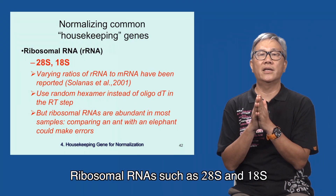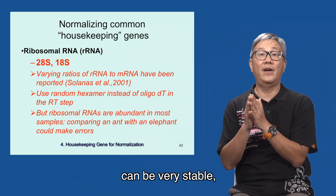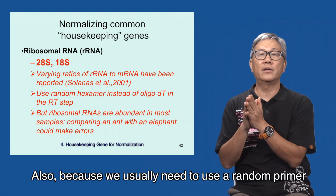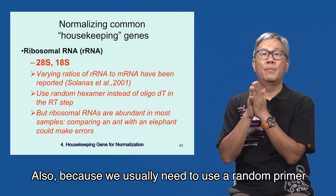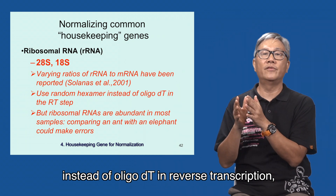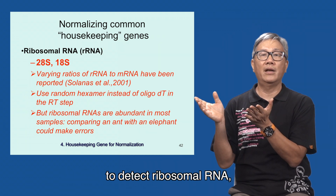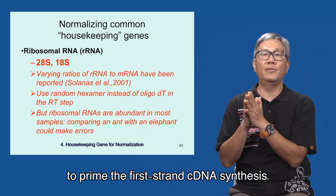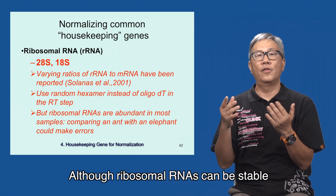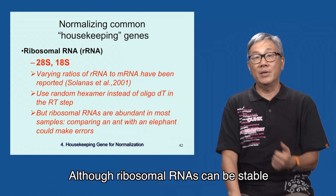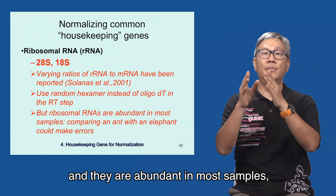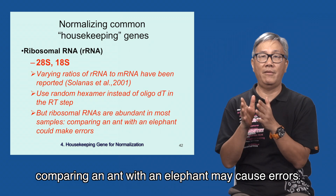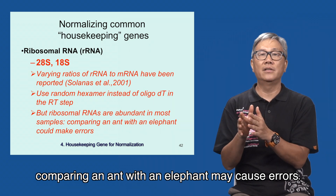Ribosomal RNAs such as 28S and 18S can be very stable, but their ratios to mRNA can be different. Also, we usually need to use a random primer instead of oligo-dT in reverse transcription to detect ribosomal RNA, if you need to use ribosomal RNA to prime the first-strand cDNA synthesis. The ribosomal RNAs can be stable and they are abundant in most samples, but if your target genes do not express much, comparing an ant with an elephant may cause errors.